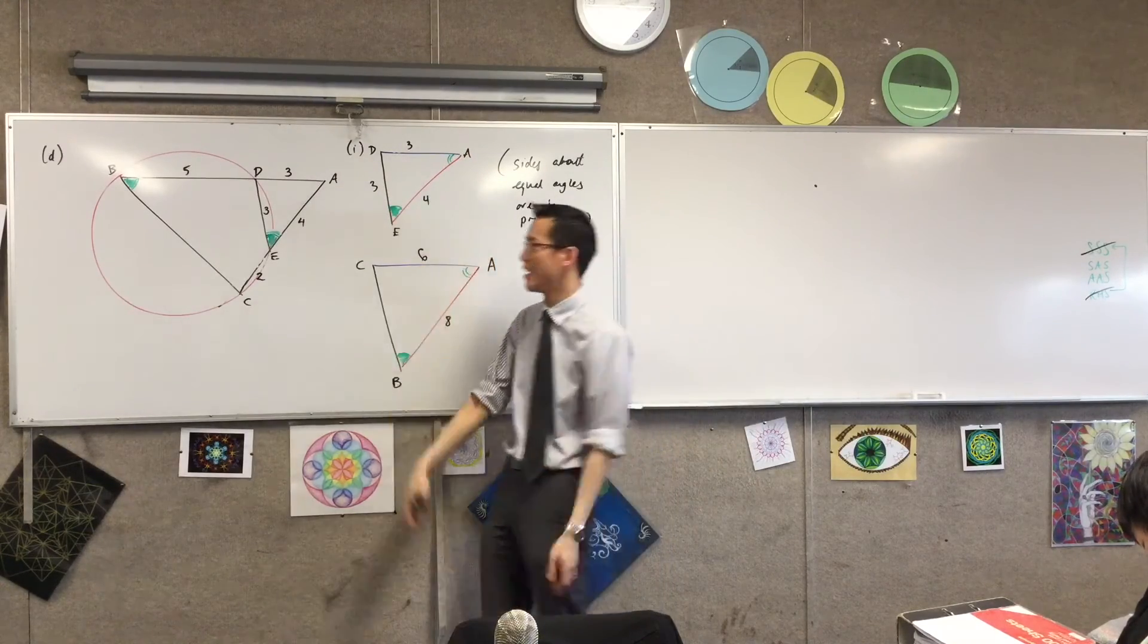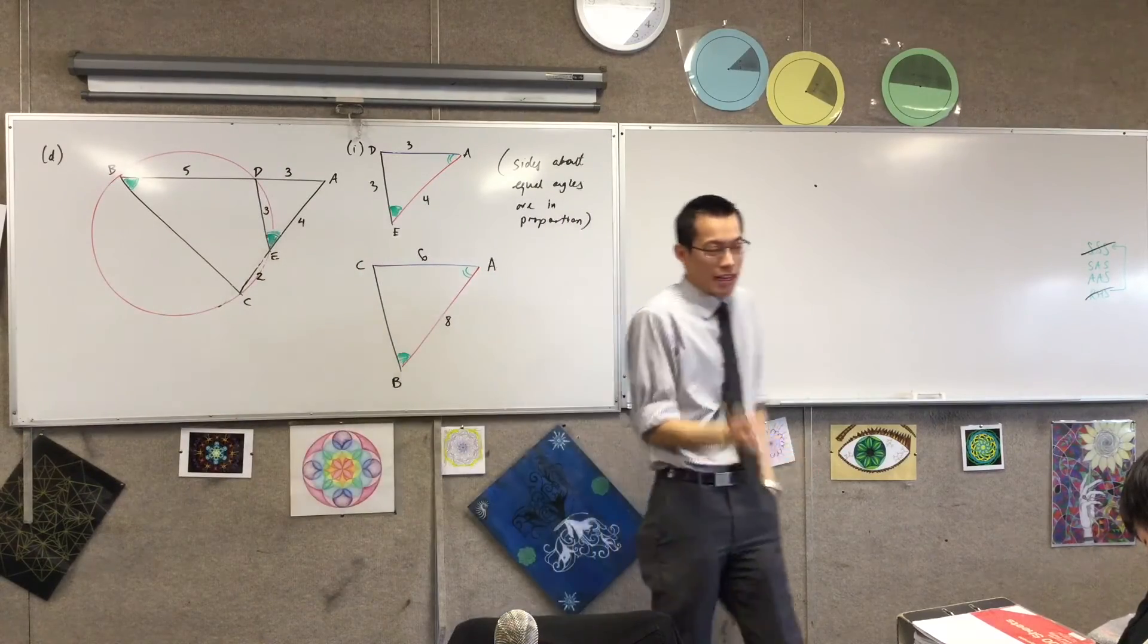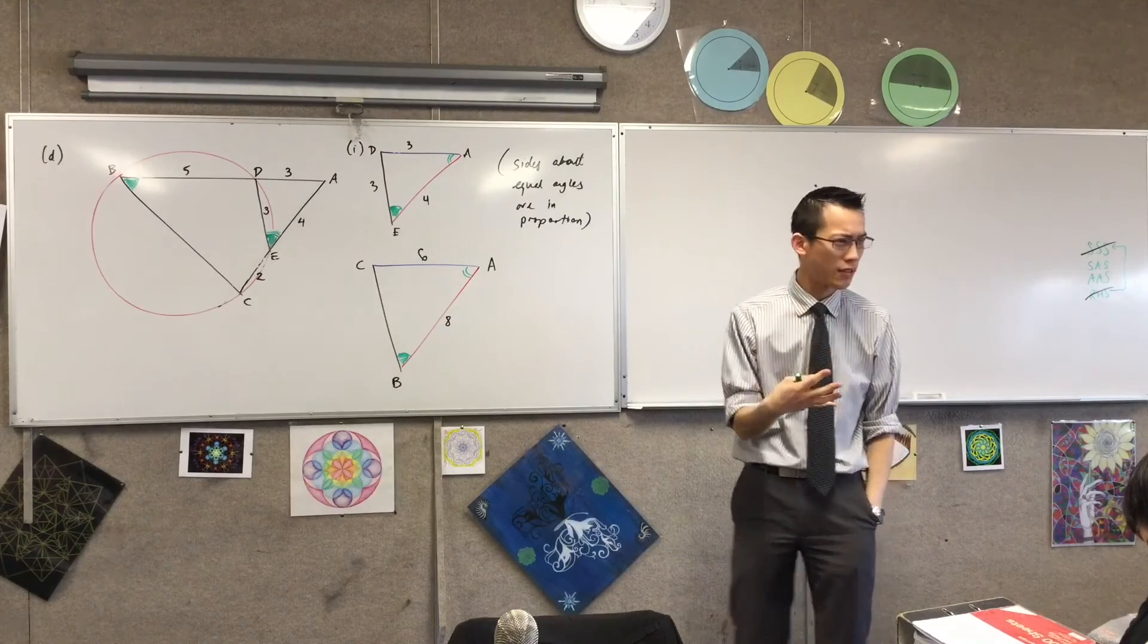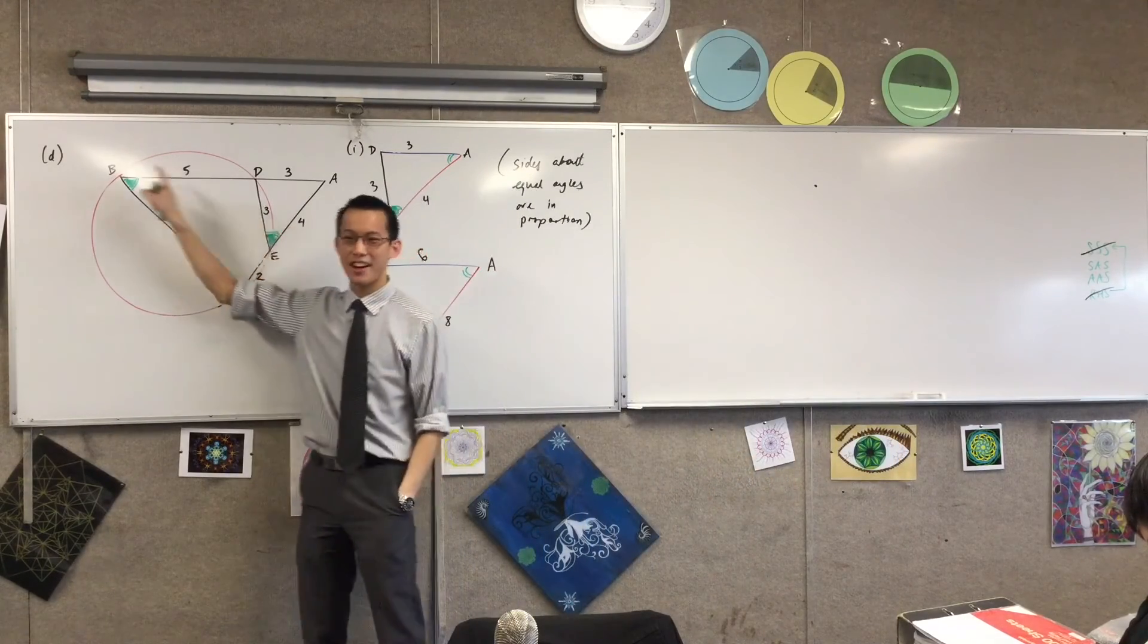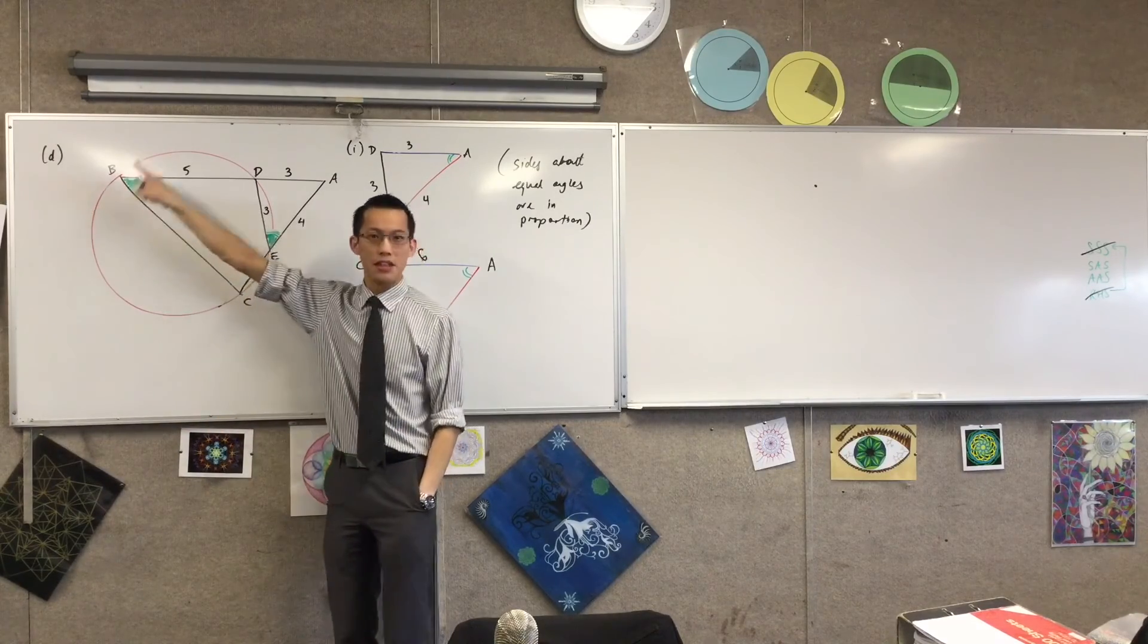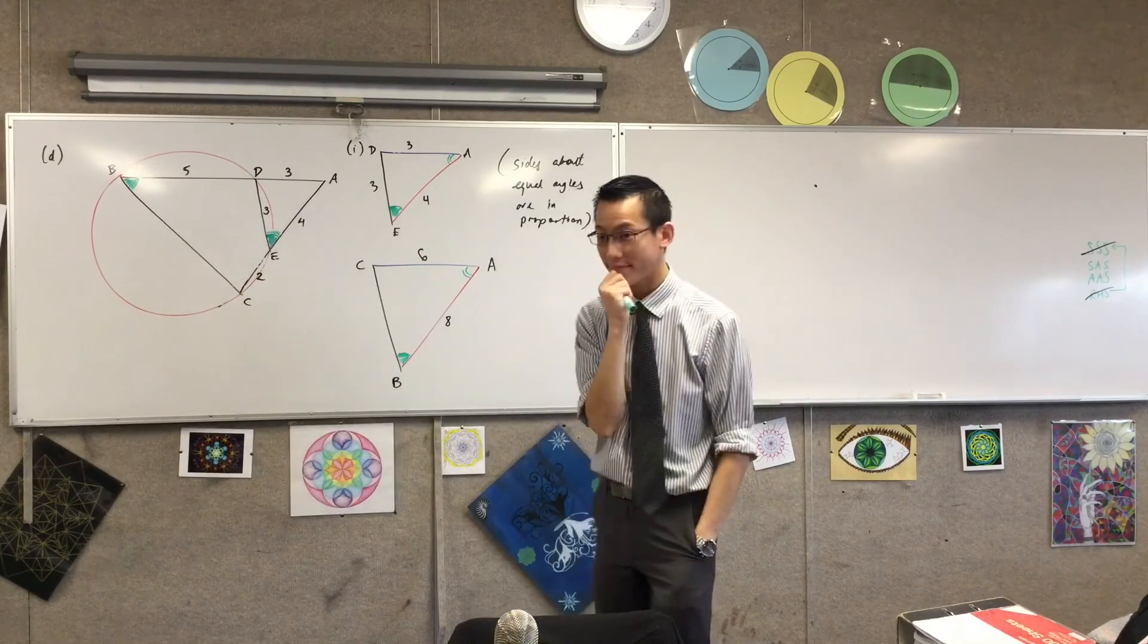Therefore, next line, therefore BDEC is a cyclic quad. Or I could even just say it's cyclic because what's the property I'm using? Exterior angle. Exterior angle of a cyclic quadrilateral is equal to the opposite interior angle.